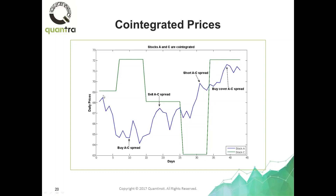However, if you look at the spread of these two hypothetical stocks — Stock C minus Stock A — you'll find that this spread is very much mean-reverting. It starts off positive, becomes very positive, becomes less positive, crosses zero, becomes negative, goes to zero, becomes very negative, goes back up to zero, and then becomes slightly positive again. The spread of A and C is very, very mean-reverting.